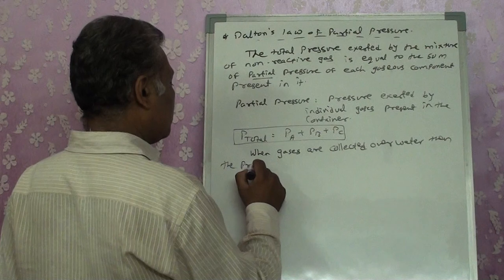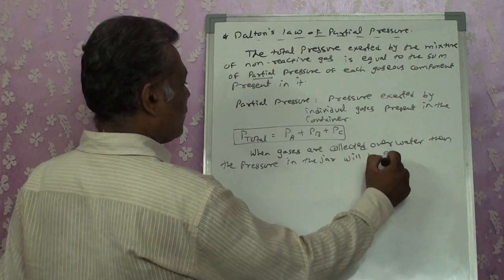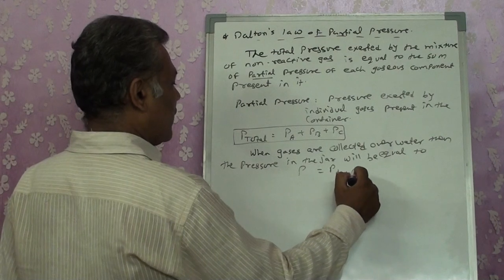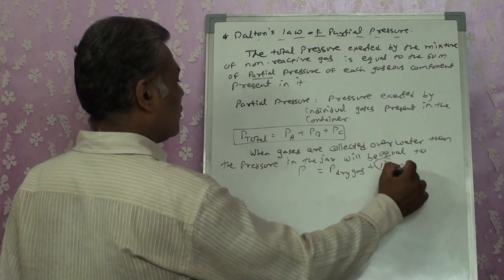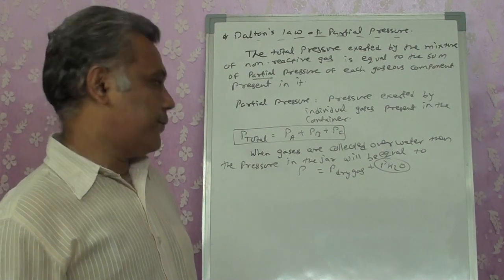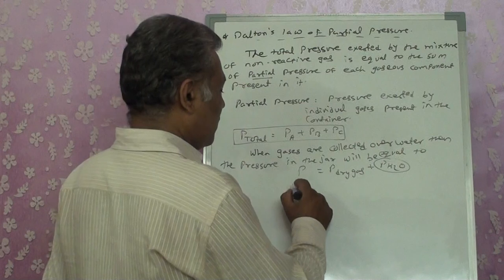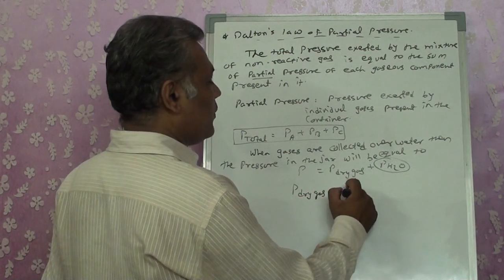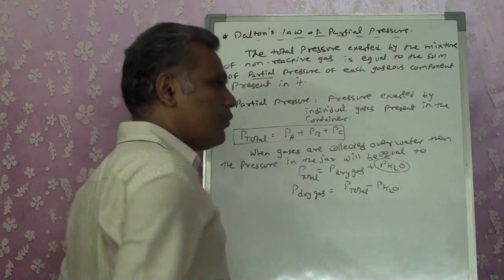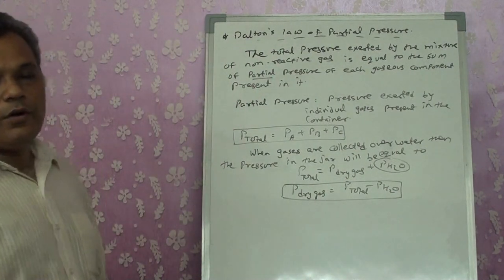So when gases are collected over water, the pressure in the jar equals P_dry gas plus P_H2O. This P_H2O is also known as aqueous tension — it is the pressure of water vapor present in the jar. Therefore, the pressure of only the dry gas molecules equals P_total minus P_H2O. This is a formula we will use for numericals.